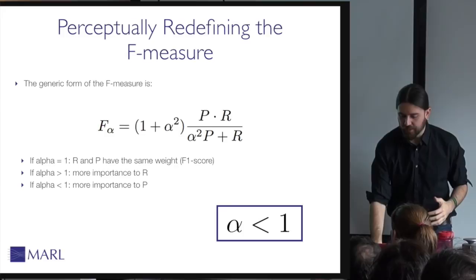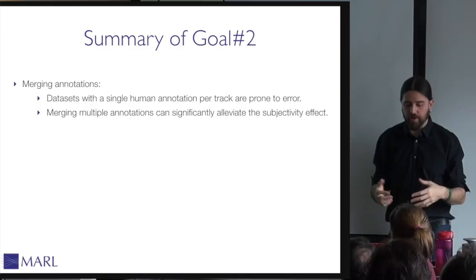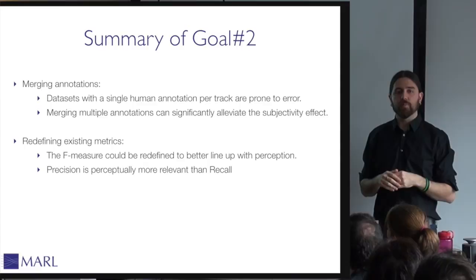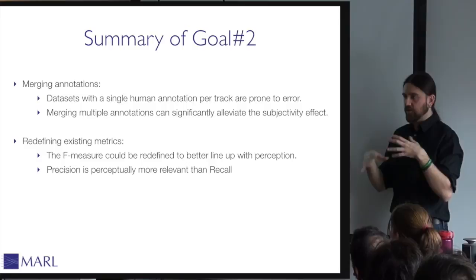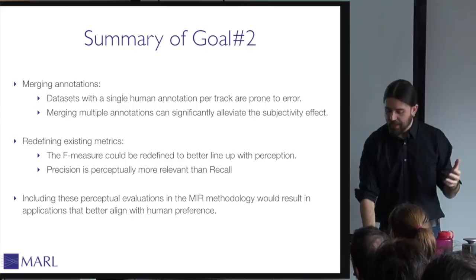In summary for goal two, I proposed two perceptual evaluations. First, merging multiple annotations, because datasets with a single human annotation per track are prone to error and merging multiple annotations can significantly alleviate the subjectivity effect. Second, redefining the F-measure, because experiments indicate that the precision value is perceptually more relevant than recall. Including these perceptual evaluations from a music perception and cognition perspective into the MIR methodology would result in applications that better align with human preference.